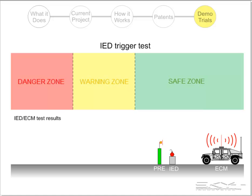An instrumented mock IED receiver is placed on the test range, and we test whether the trigger signal is able to cause a detonation signal in the IED receiver. In this case it doesn't, so we'll color the distance between the ECM antenna and the IED receiver green. A detonation didn't take place, so we're safe.